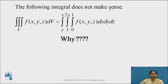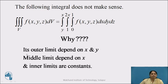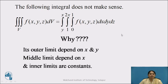The following integral does not make any sense. See the integral: triple integral over V of f(x, y, z) dV equals integration from y to x, integration from 1 to 2x, integration from 0 to 1, f(x, y, z) dx dy dz. Why does this not make sense? The outer limits depend on x and y, the middle limits depend on x, and the inner limits are constant. This integral does not obey the rule of triple integration. Therefore, we say that this integral does not make any sense.